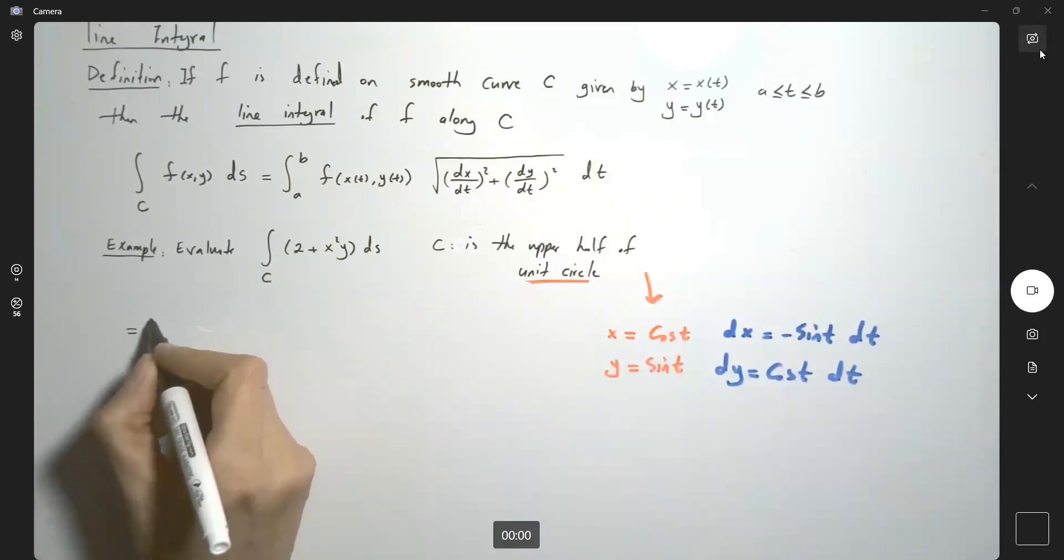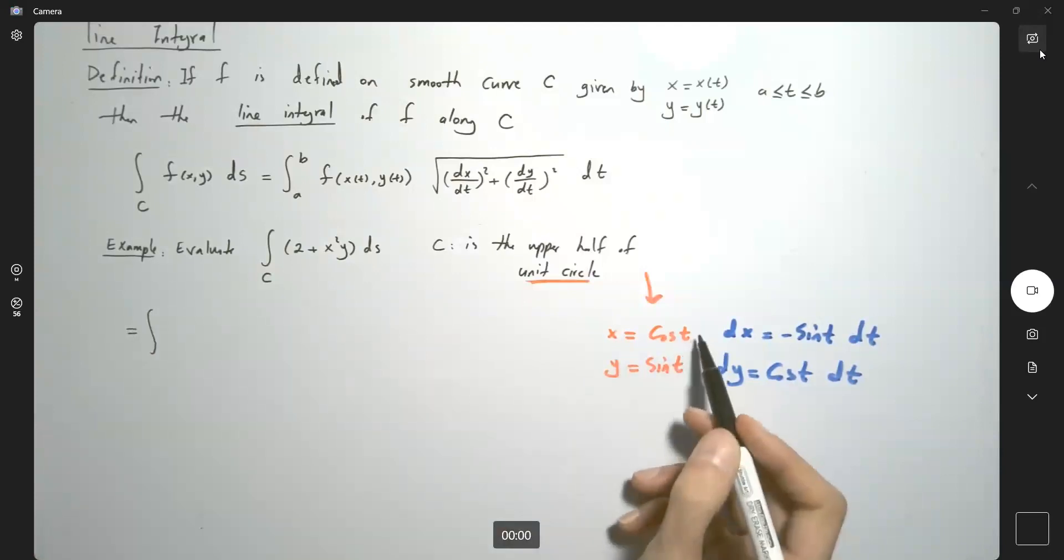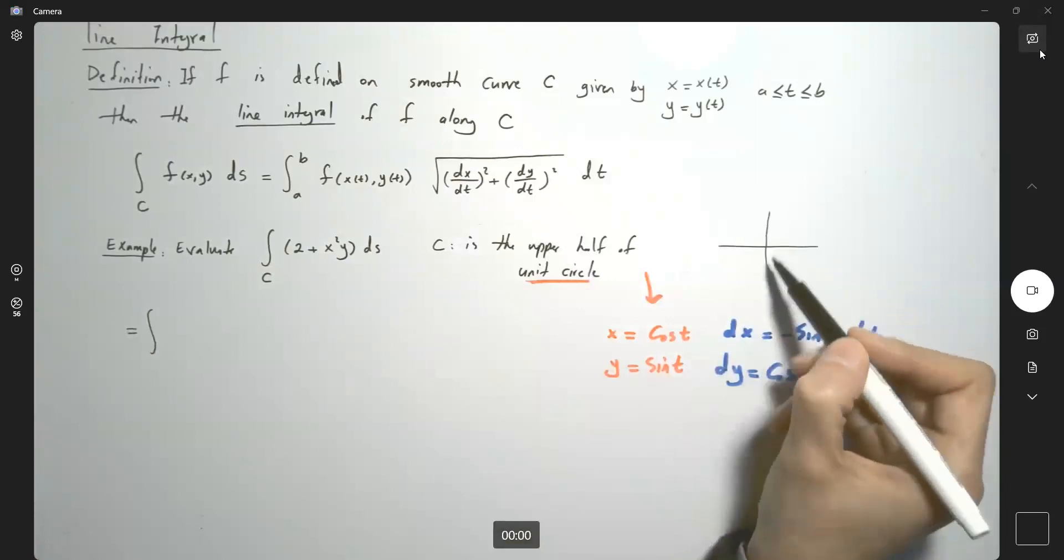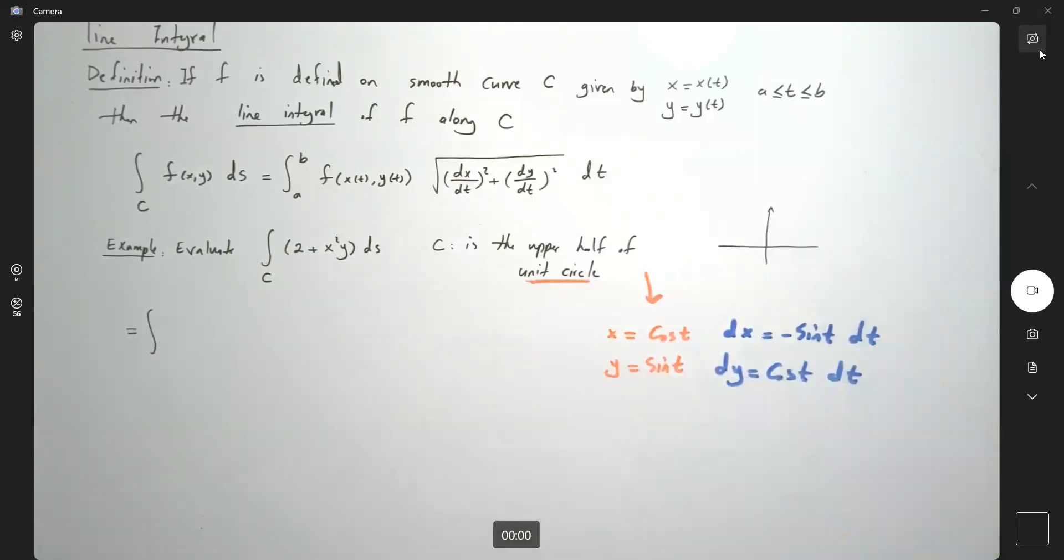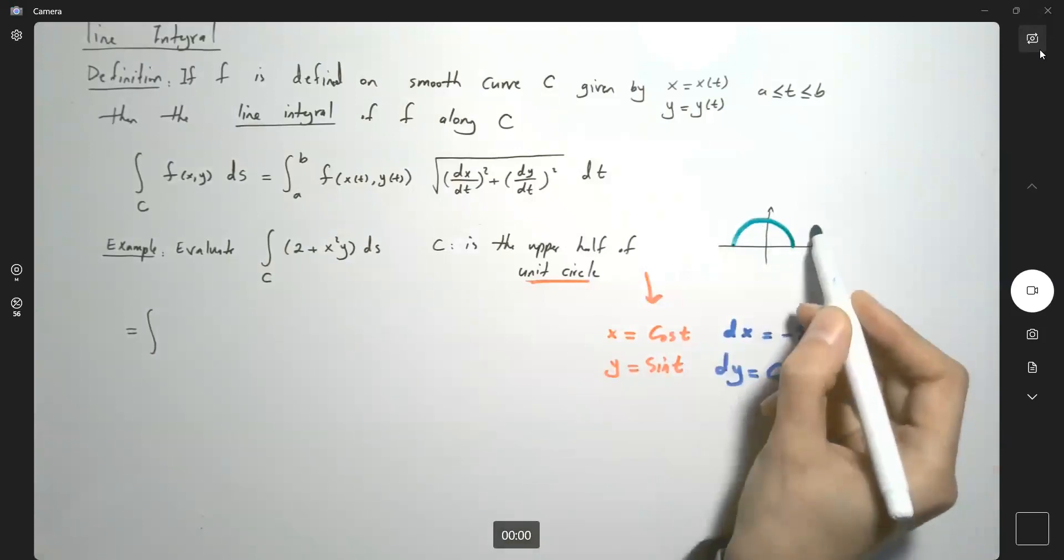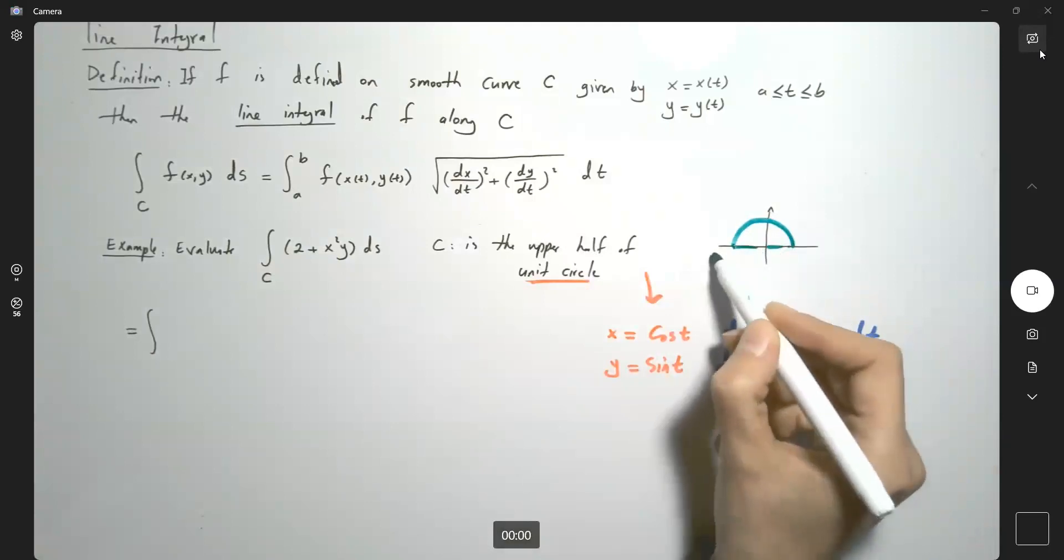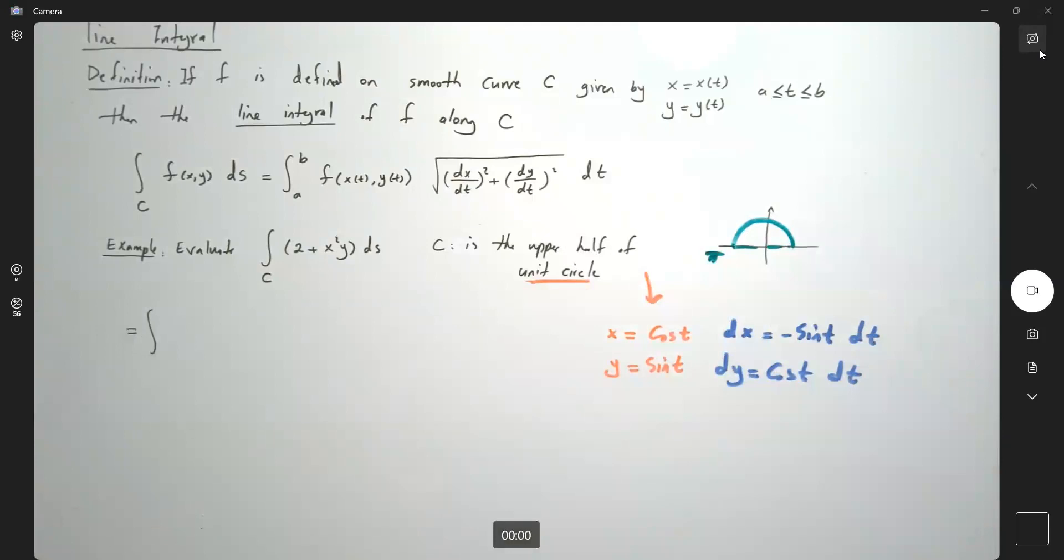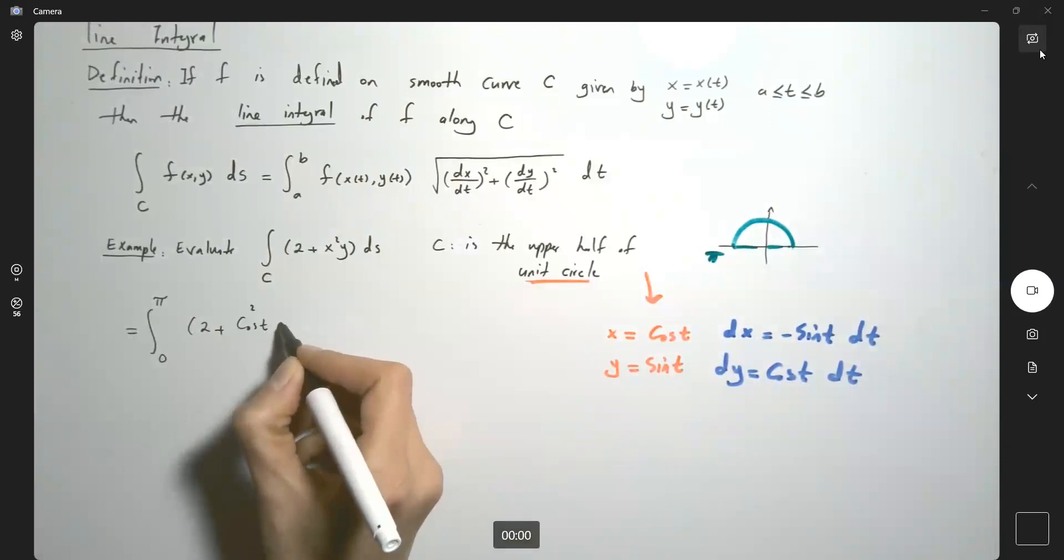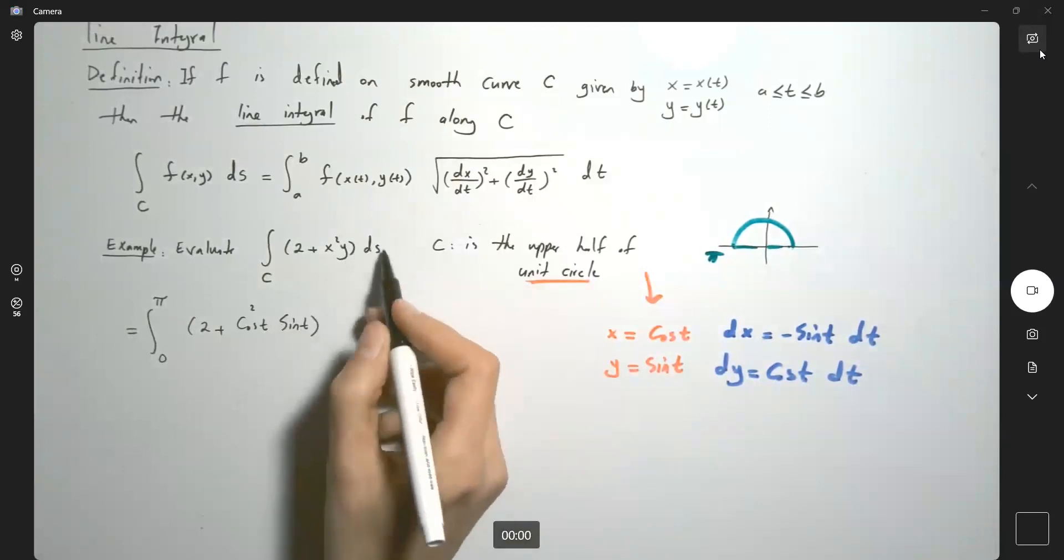So the line integral becomes the integral from zero to π—since t is bounded by the upper half unit circle—of 2 plus x squared, which is cosine² t times sine t, times ds.